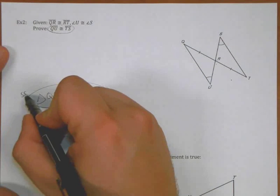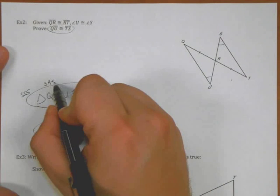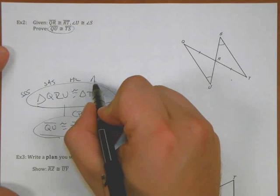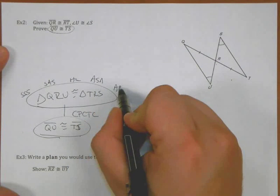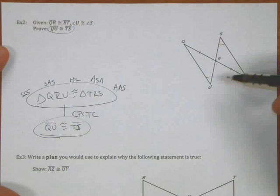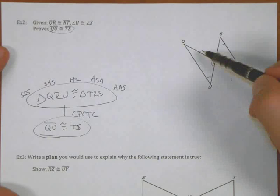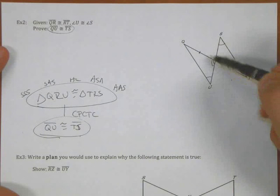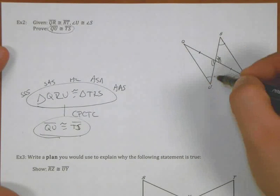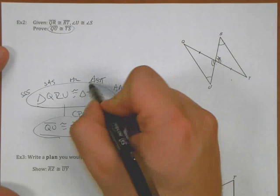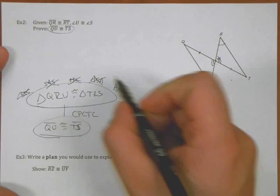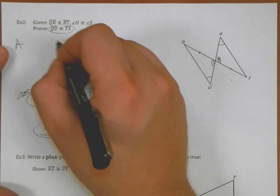So why might these be congruent? Well, let's see, I could use side, side, side. I could use side, angle, side. I could use hypotenuse leg. Angle, side, angle. Or maybe angle, angle, side. Looking at this diagram, I have an angle. I know right away that I have vertical angles and a side as well. So I have two angles and a side, notably the side that's not between the two. So I'm thinking I'm going to have to use angle, angle, side.